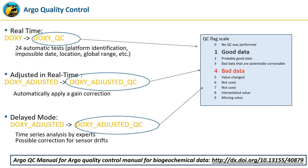Regarding QC flags: to be on the safe side, only use data with QC flag equal to 1 and discard systematically all data with QC flag equal to 4. Other data types can be used with caution. All information about the QC applied is available in the Argo quality control manual.